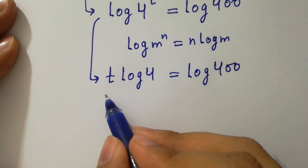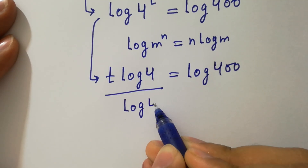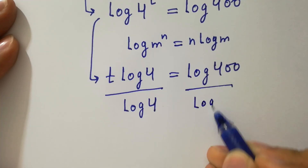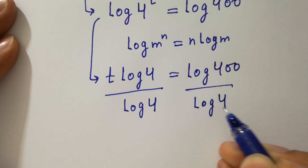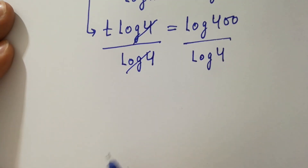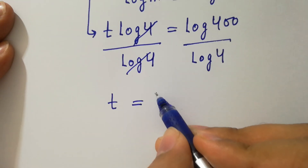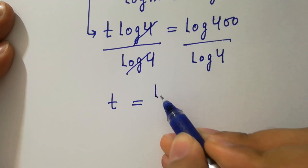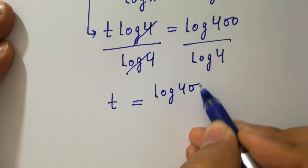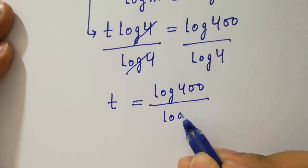To find t, divide by log 4 on both sides. Log 4 and log 4 cancel. We have t equals log 400 over log 4.